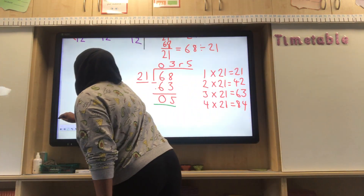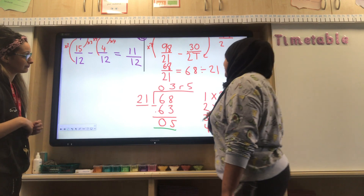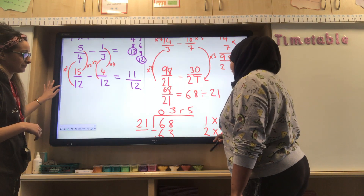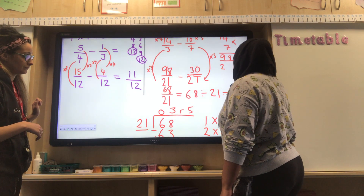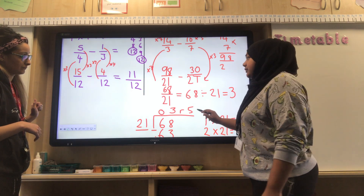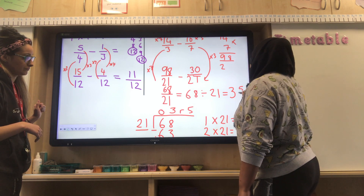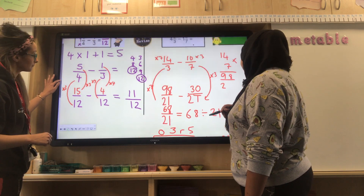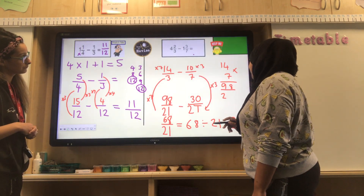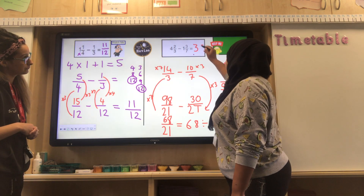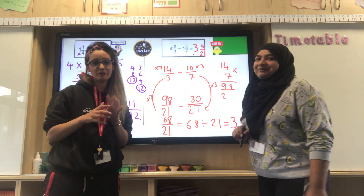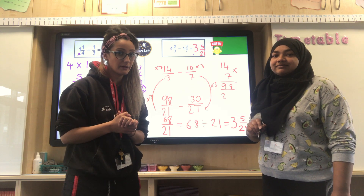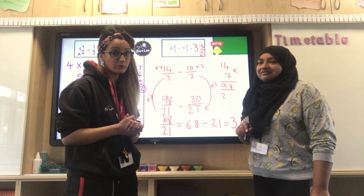We can now convert back to a mixed number. Three remainder five means three wholes, and we write the remainder as a fraction with the divisor as the denominator — so five over twenty-one. Therefore four and two thirds subtract one and three sevenths equals three and five twenty-ones. Some of you may think you could just do four minus one and find the common denominator — you can with some questions, but it doesn't always work. So it's a really good strategy to convert to improper fractions and work from there.